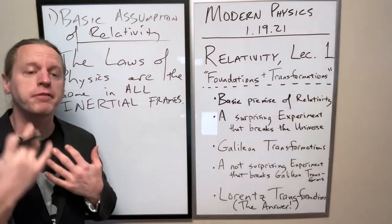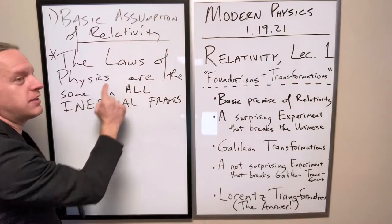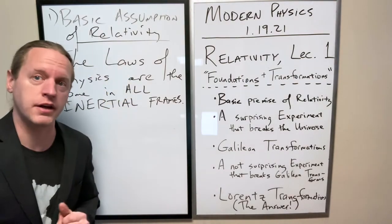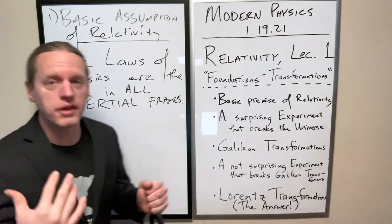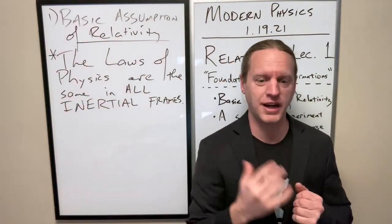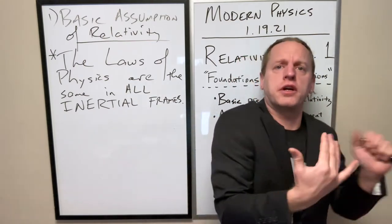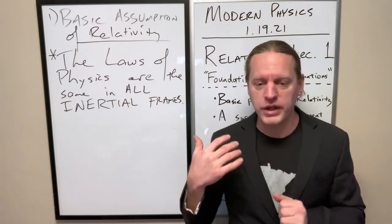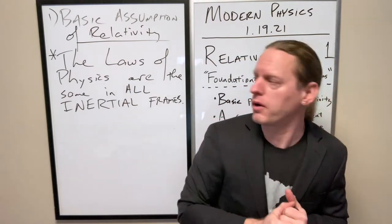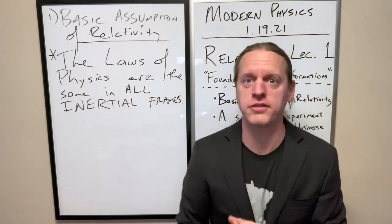And literally everything that he did after was in search of trying to make the statement apply for as many theories that we had at the time. Which, if you remember when Einstein was doing his work here for special relativity, this was the early 1900s. So we didn't have like a nuclear theory of physics yet. We didn't have, we didn't know the strong and the weak nuclear force. We didn't understand neutrinos, things like that.